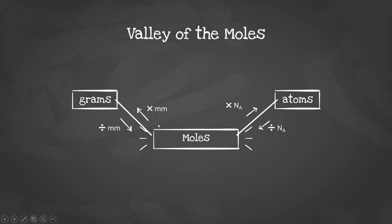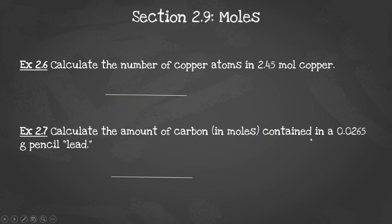To go from moles to grams, you multiply by the molar mass. To go from moles to atoms, you multiply by Avogadro's number. And then to go down into the valley of the moles, you're going to divide by the molar mass on the left, or divide by Avogadro's number on the right. Here are some examples that we're going to do.